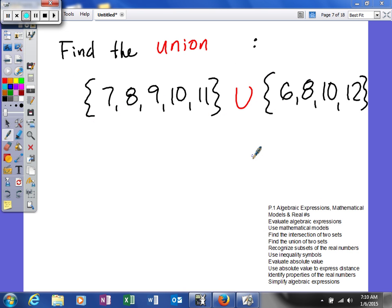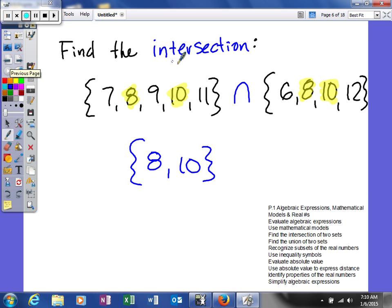Next, what we're going to do is we're going to find the union between the two sets. Now, if you look at the symbol to represent intersection, it looks kind of like this.